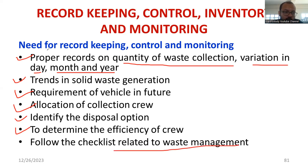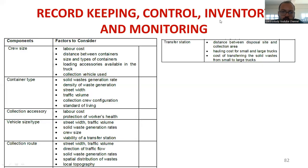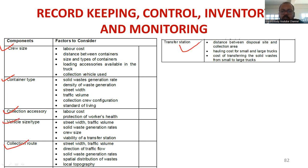These are the key aspects of record keeping, control, and monitoring. The following points will be monitored: crew size, container type, collection accessories, vehicle size and type, collection route, and transfer station information — all of this will be recorded.